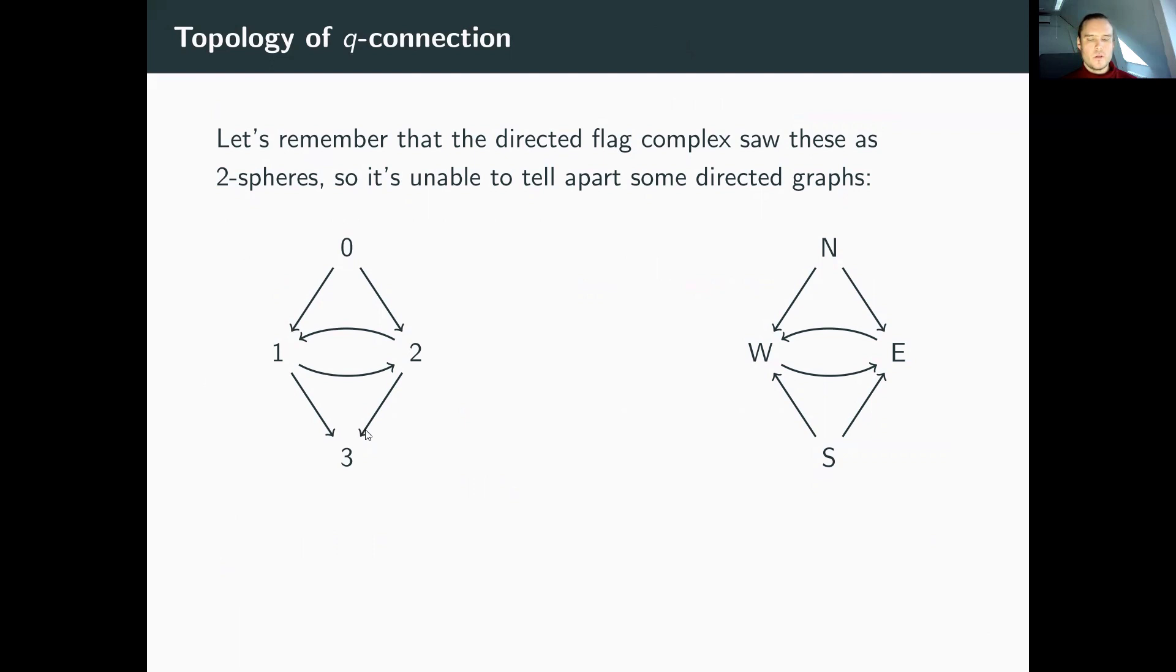What kind of topology do we get from this q-connection? Let's again look at these two directed graphs, which from the point of view of directed flag complex and its simplicial homology were two-spheres. The simplicial homology was unable to see these as different objects. If we look at the 1-connection along d1, d2 face maps, construct the simplices, look at this relation of 1-connection along d1, d2 directions, take that pre-order, condense it into a partial order, and look at the homotopy type, we see that these are actually different. The left one gives us a wedge of two S1s and the right one is S1. Indeed, we've introduced different topologies that can tell these two directed graphs apart.